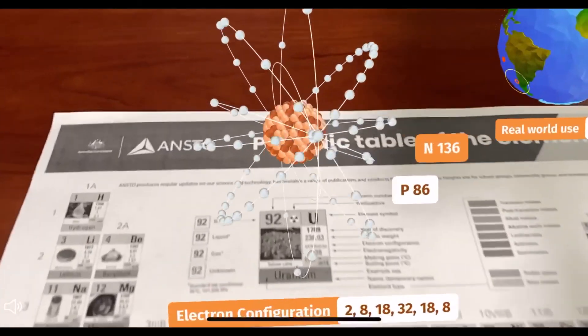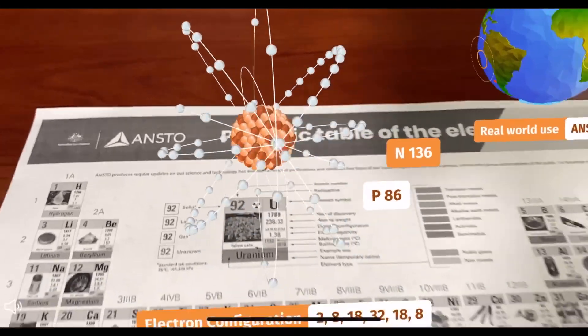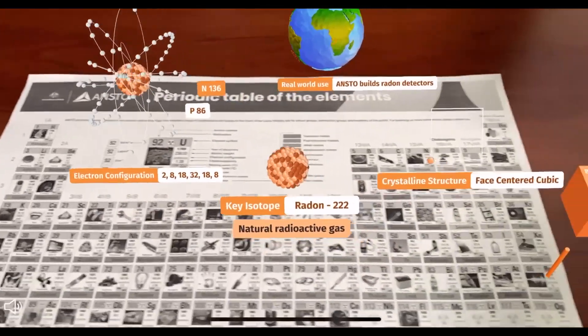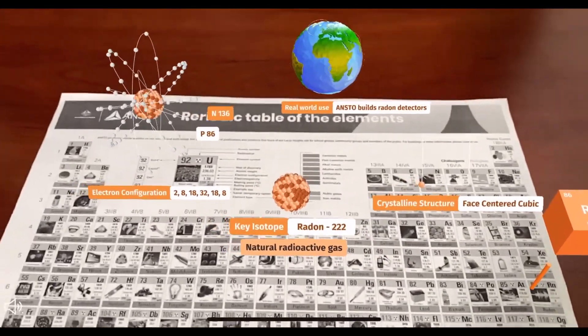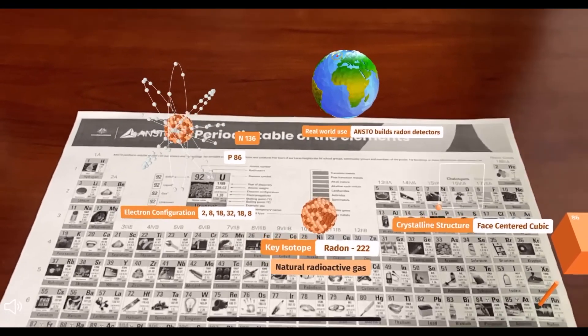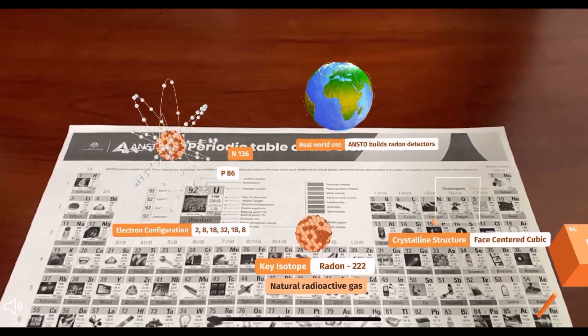Radon helps monitor air quality. The naturally occurring isotope radon-222 can be used to determine the source and characteristics of pollutants in the atmosphere.